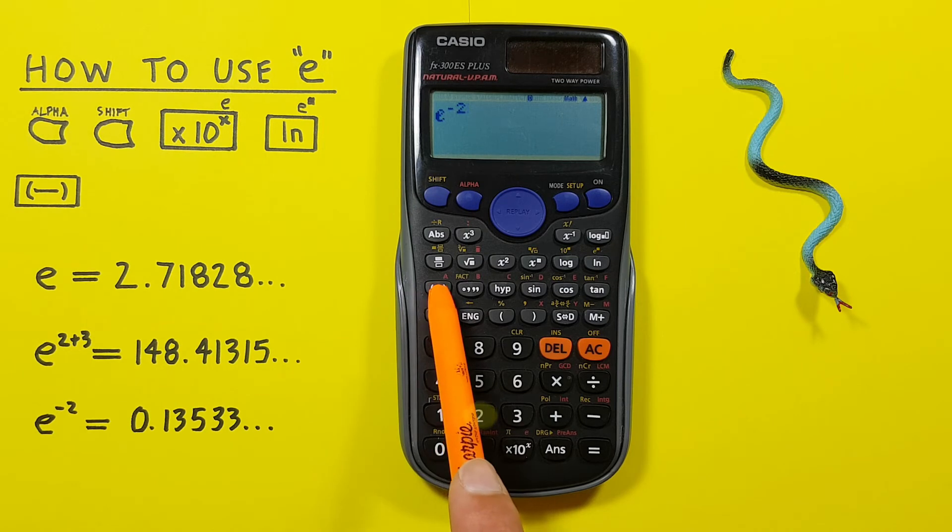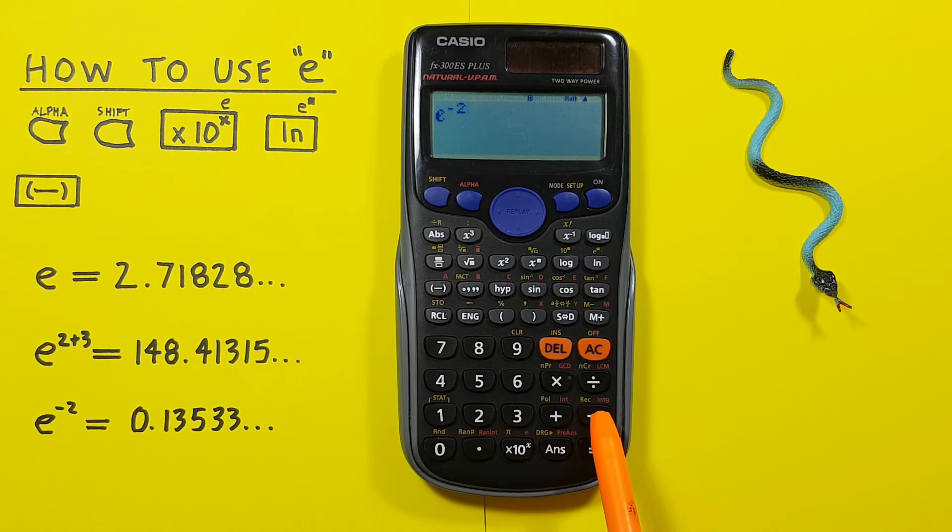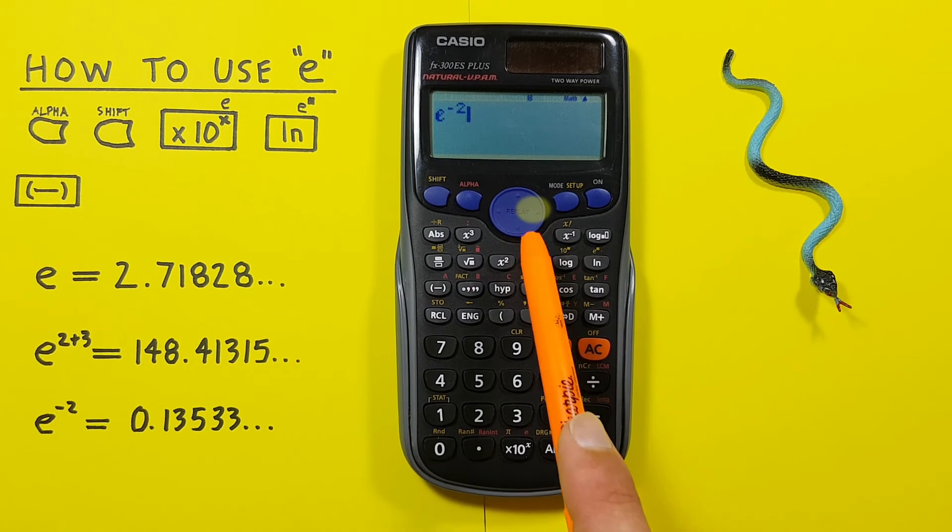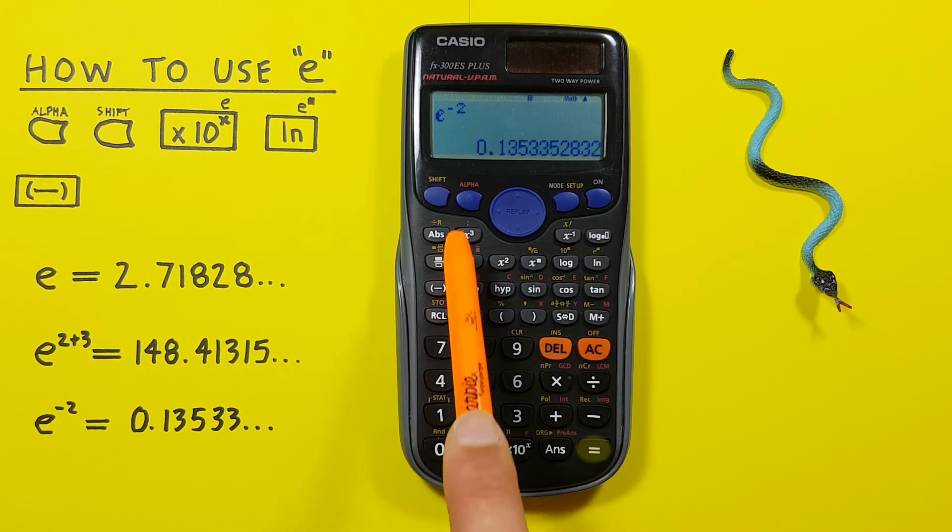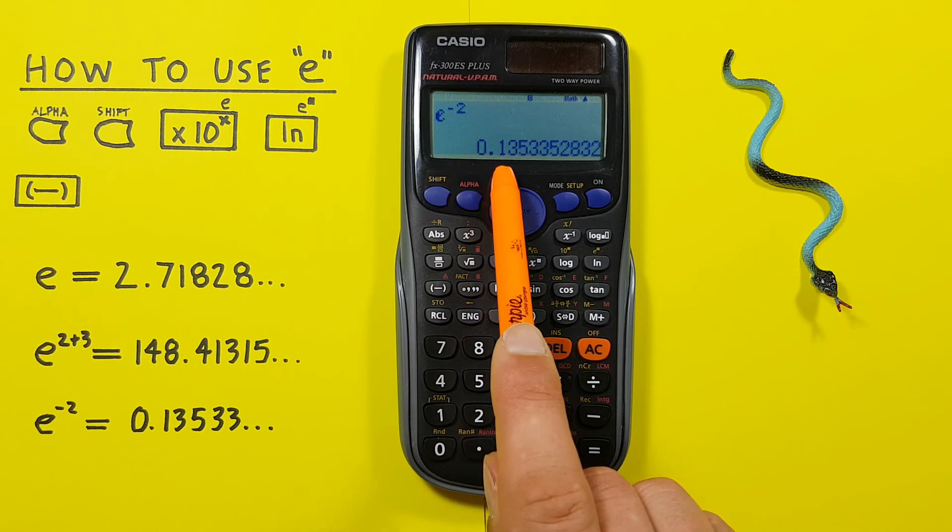We make sure to use the negative key and not the subtraction key here because that will give us a different result. Bring our cursor down and press equals, and see we get a result of 0.13533, etc.